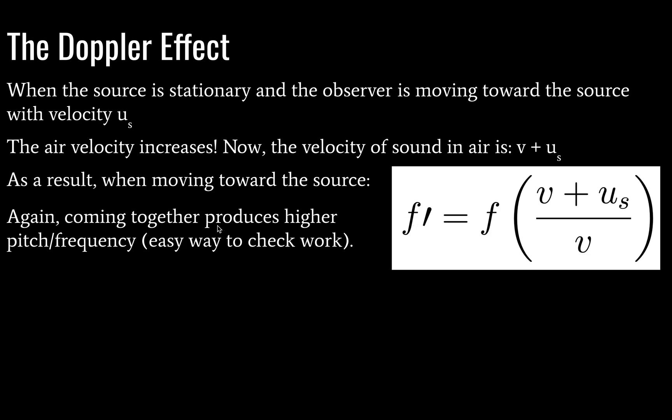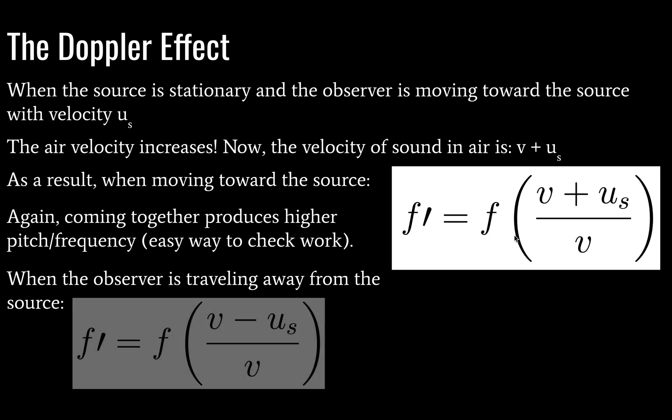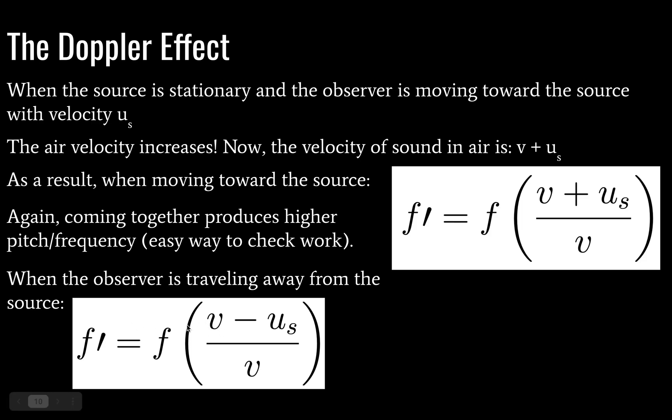Again, coming together is going to produce a higher pitch or frequency. And this is an easy way to check your work. If you have objects coming together, and you've produced a lower shifted frequency than your initial frequency, you know you've made an algebra mistake, and you need to go check it. When the observer is traveling away from the source, we will have a smaller frequency, a lower pitch, and that equation is given by this. I don't need to go through all the variables at this point. I think all we need to know is that we have intuitively a lower pitch. Just think of your train, and that special sound.